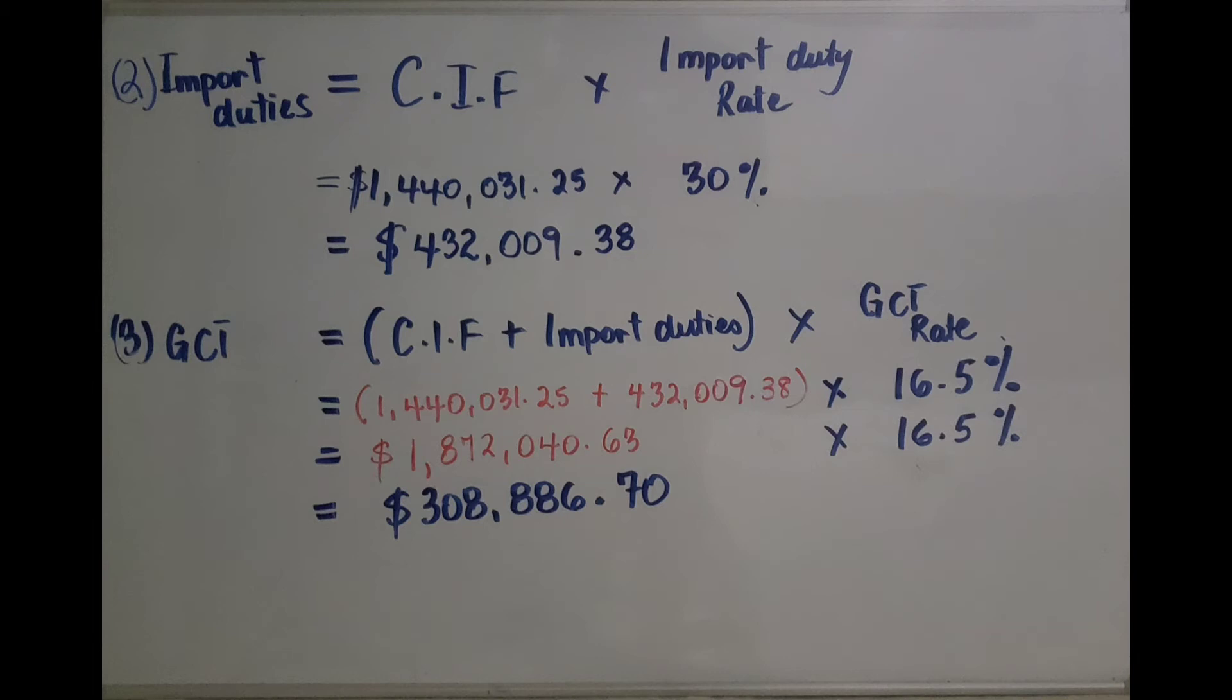Now for the GCT. The GCT is the CIF plus the import duties, then you multiply the GCT rate. You add the CIF and import duties first, then you multiply the 16.5%. When you do that, you should get $308,886.70.